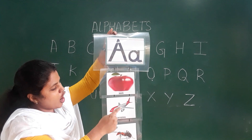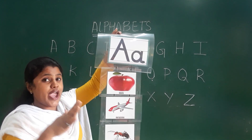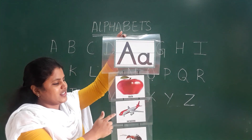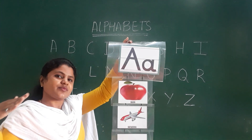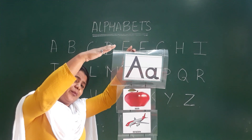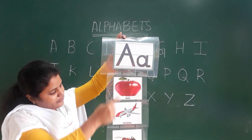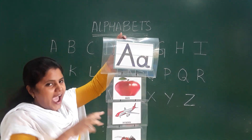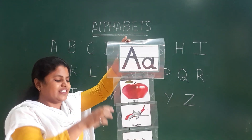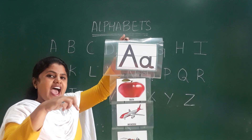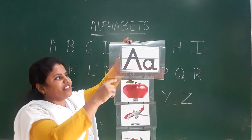Then A for aeroplane. What is this? Aeroplane. Then A for ant. What is this? Ant.